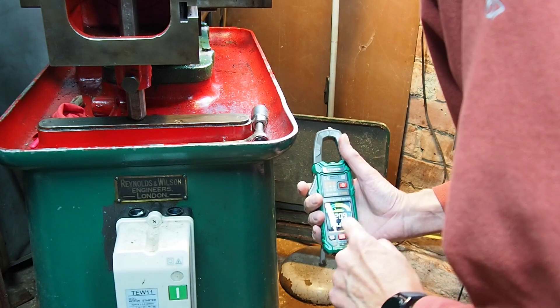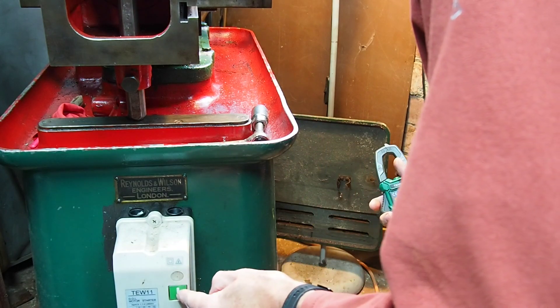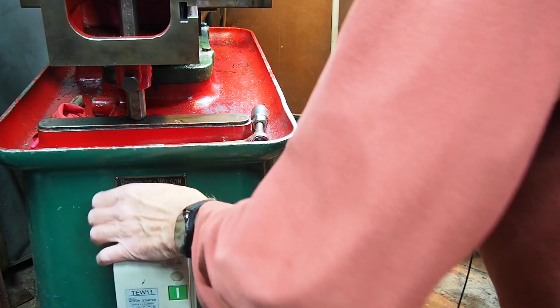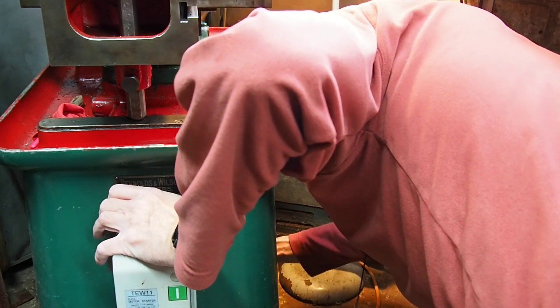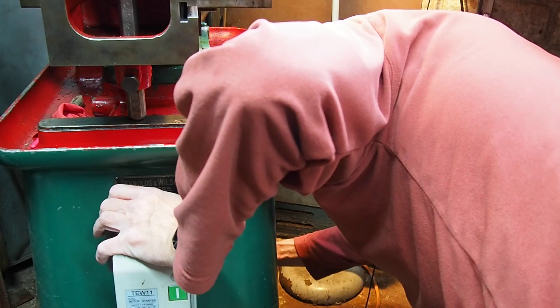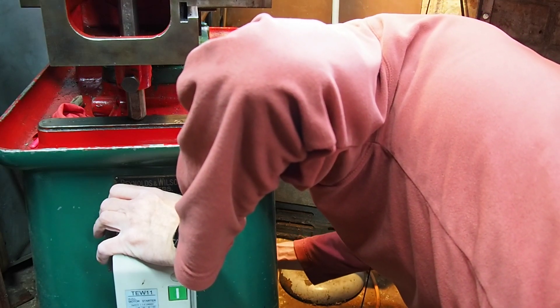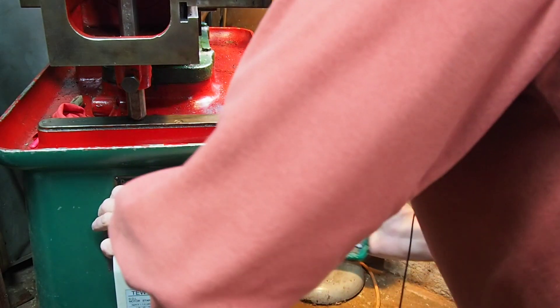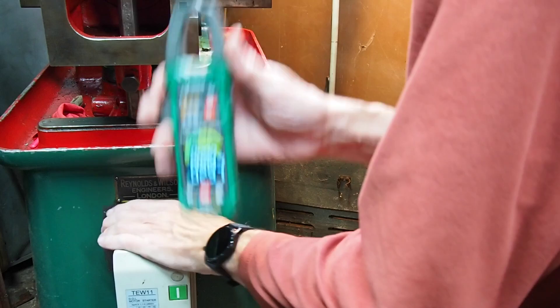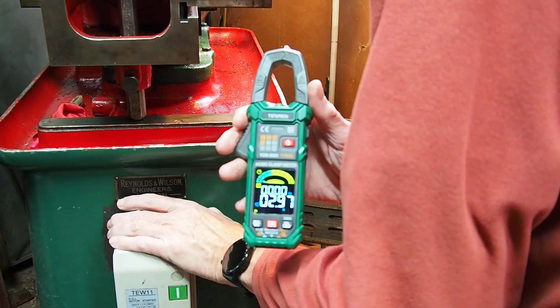The meter's on auto. I'm going to start the motor like so and grab the middle conductor there. Hopefully I'm going to get a reading. Yeah we've got a reading, so I'm going to press hold. There we are, 2.97 amps. Hopefully you can see that there.